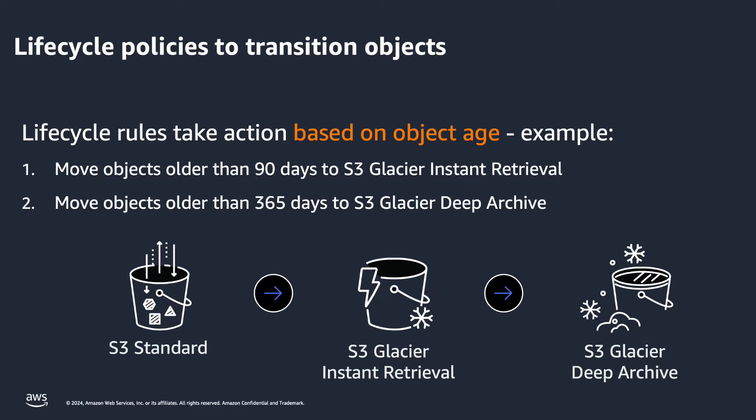Rule number 1 will move all objects older than 90 days to S3 Glacier Instant Retrieval. Keep in mind that S3 Glacier Instant Retrieval is a synchronous storage class. Objects will stay in Amazon S3 Standard for the first 90 days, and then be tiered down to Amazon S3 Glacier Instant Retrieval for cost optimization.